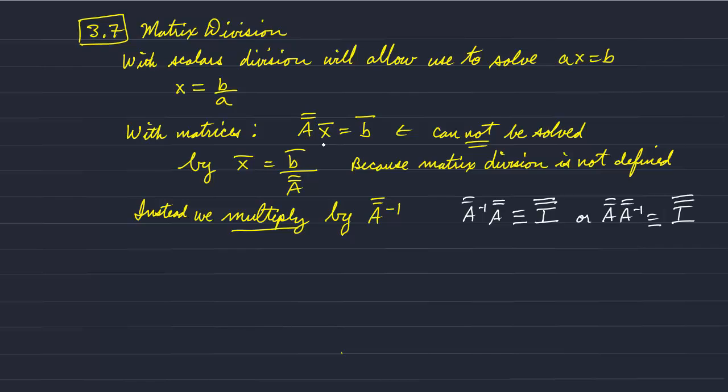So to solve our equation here, what we would do is we could multiply both sides of the equation by the inverse of A. And when we do that, we get I for the first product times X. And I times X, the identity matrix times X, just yields X.